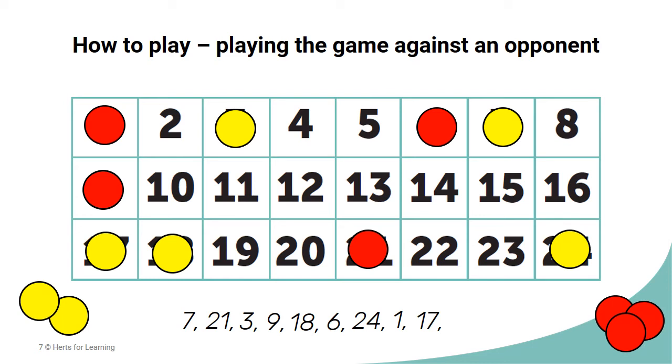The yellow counters win because there are 5 on the game board. There are no multiples or factors left on the board for 17, so the game comes to an end.